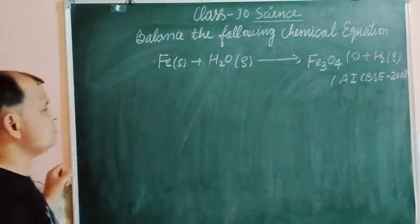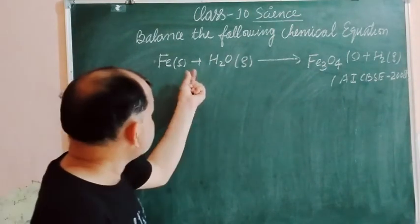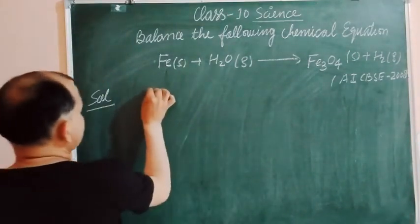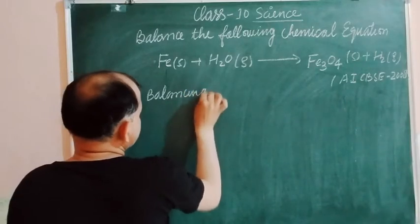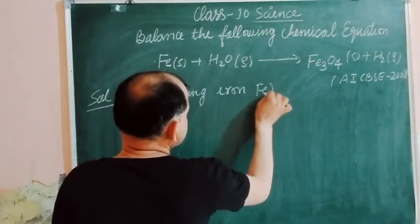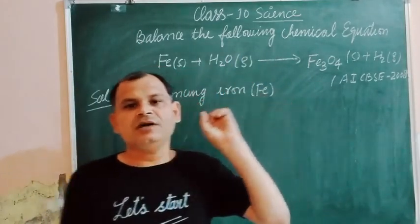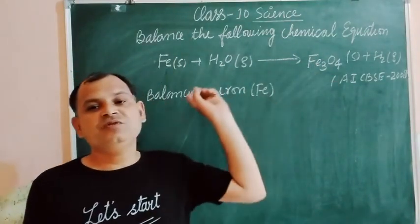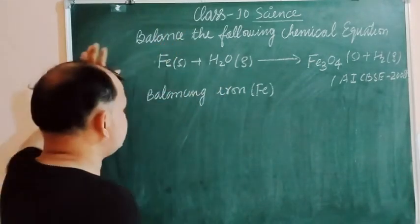So we balance this equation. First we balance iron. Balancing iron, also known as ferrous Fe. Here is Fe, only one atom, and here are three atoms, Fe3. So we multiply left hand side Fe by 3.